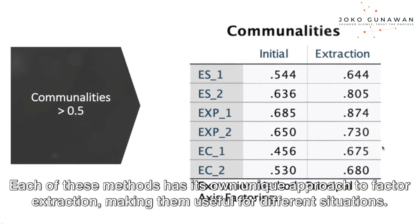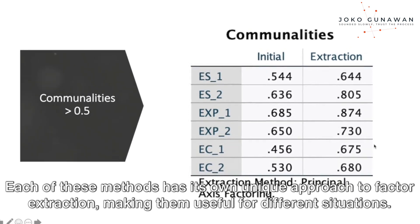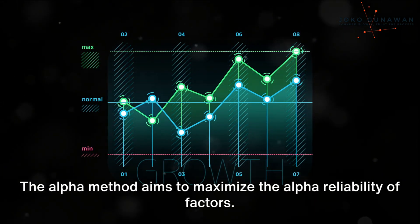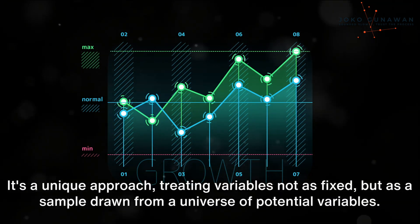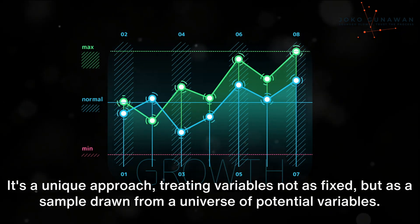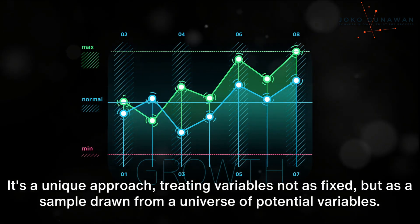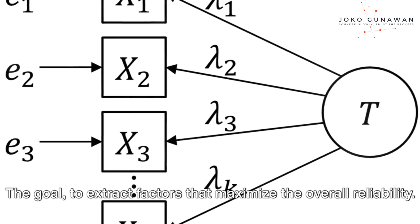Each of these methods has its own unique approach to factor extraction, making them useful for different situations. The alpha method aims to maximize the alpha reliability of factors. It's a unique approach, treating variables not as fixed, but as a sample drawn from a universe of potential variables. The goal: to extract factors that maximize the overall reliability.